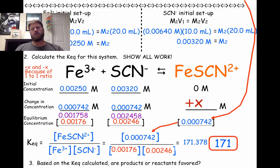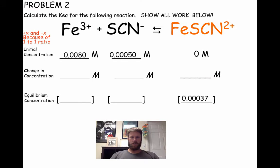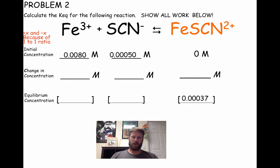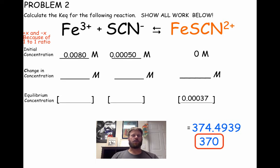Based on the K that we calculated, are products or reactants favored? K is greater than one. The only way that happens is if the numerator is bigger than the denominator. Products are in the numerator, so products are favored. Here's another sample problem that is exactly like the equilibrium portion of the problem we just did. I encourage you to pause the video and try it out. When you think you've got it, press play and it'll work through the solution. You should get 370 for your K value.